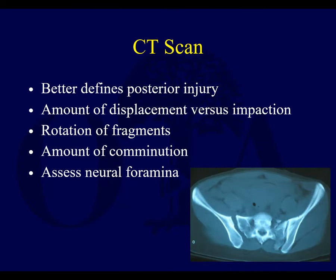CT scans help show the posterior ring better since the sacrum is often obscured by bowel gas on plain films. CT helps identify whether there's a complete front-to-back fracture through the sacrum or just an anterior impaction as seen with an LC1. It also helps identify a true dislocation through the SI joint, which can be hard to see on AP X-rays.